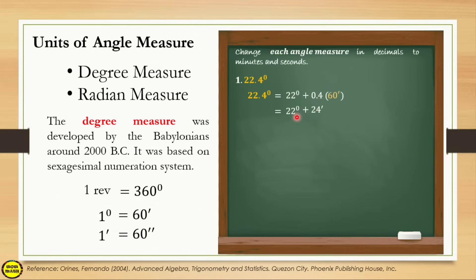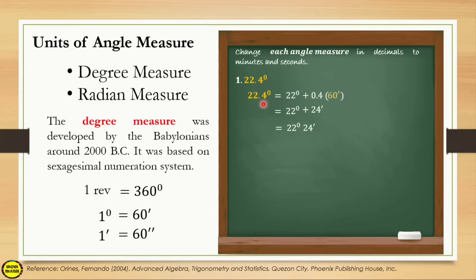If after multiplying the decimal there is still a decimal remainder, multiply that by 60 seconds to get the seconds value. Since in this example the result was a whole number (24 minutes), no further conversion is needed. The final answer is 22 degrees and 24 minutes. Using a scientific calculator, you can verify this by typing the value and pressing the degree-minute-seconds symbol.